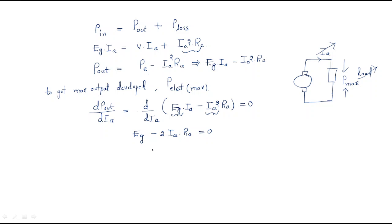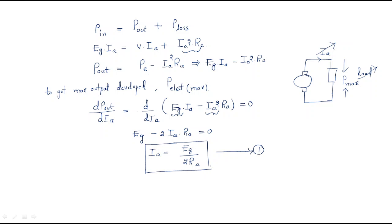From this we can find out the armature current IA equals EG divided by 2RA. We consider this as the first equation. So to get the maximum output power developed, the armature current must be EG by 2RA.